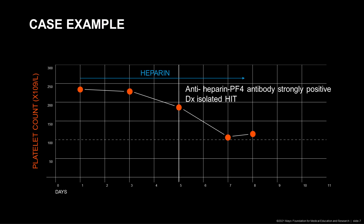The platelet count eventually reached a nadir on day seven of heparin therapy. At this point, the clinicians suspected HIT, discontinued heparin, and ordered the anti-heparin platelet factor IV antibody immunoassay, which turned out to be strongly positive, and he was diagnosed as having isolated heparin-induced thrombocytopenia.